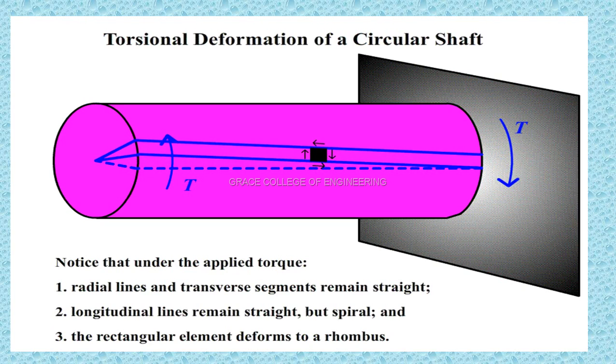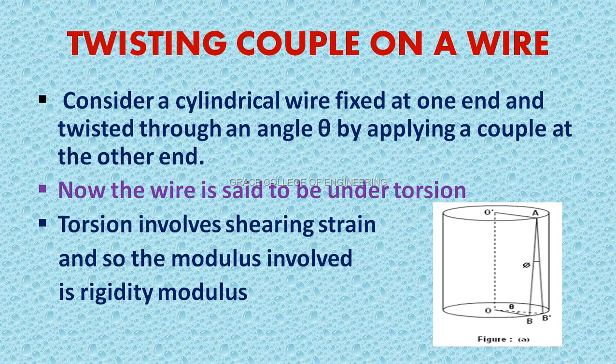The next one is twisting couple on a wire. Now we are going to find the twisting couple on a wire. Here, let us consider a cylindrical wire. The cylindrical wire is fixed at one end and twisted at the other end. First, the point is OB, after twisting it becomes OB'.